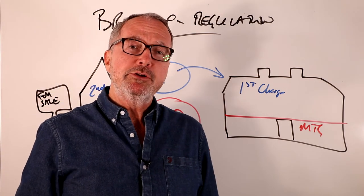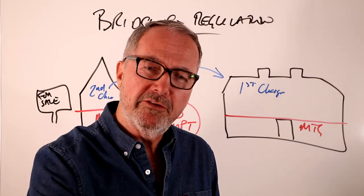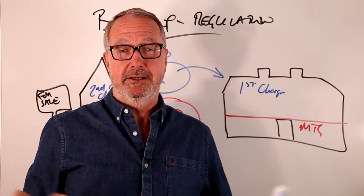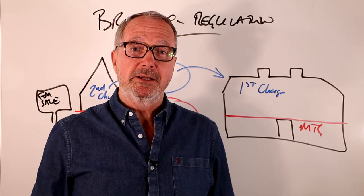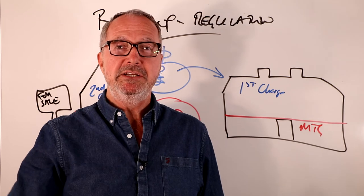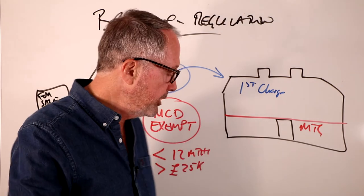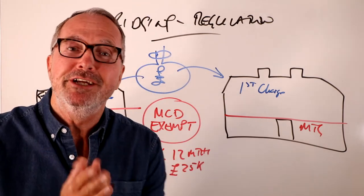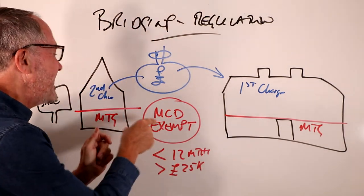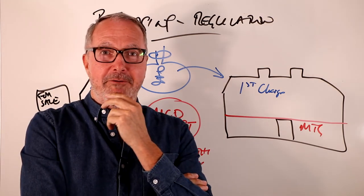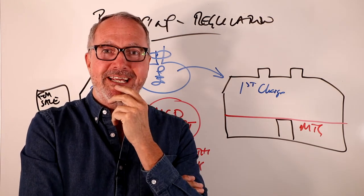If, however, the bridging finance is for more than 12 months, then it is regulated under MCOBS. And you have to have things like ESIS provided as well, affordability needs to be assessed, etc. So you can probably appreciate the vast majority of providers of bridging finance only get involved in MCD exempt stuff, because they don't want to get faffing around with affordability calculations.